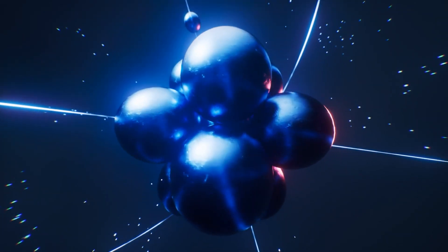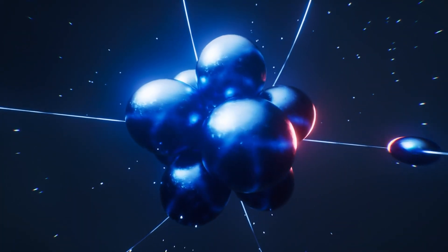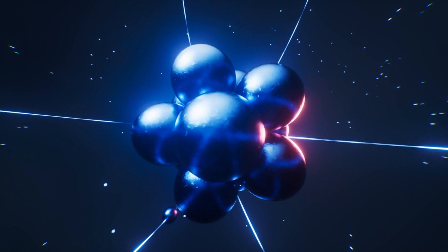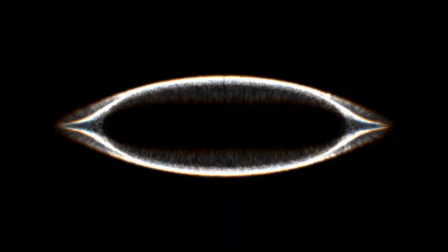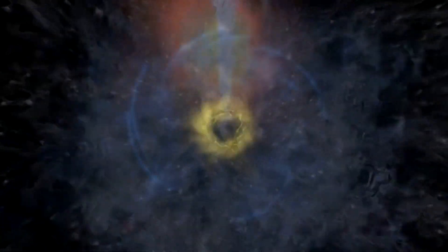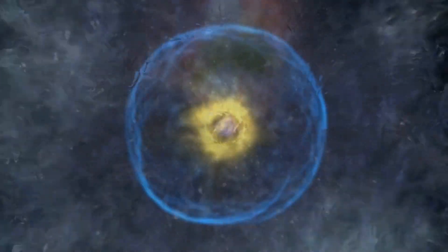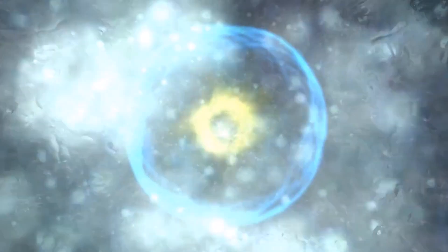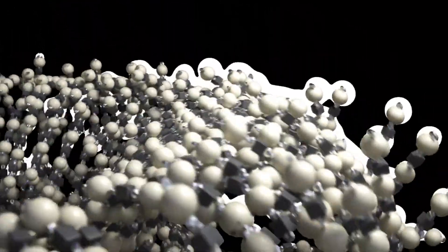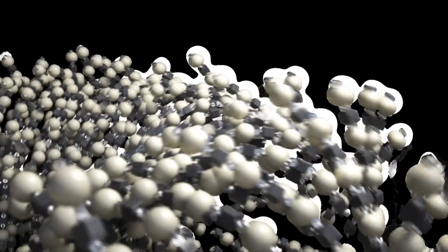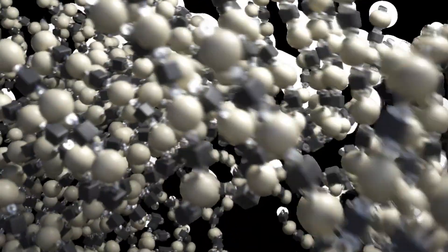But perhaps the most terrifying theory as to why the Boötes void exists is one that could spell the end of the entire universe. The reason? Strange matter. Strange matter is believed to be a highly stable form of quark matter that exists under extreme conditions. Quarks are fundamental particles that combine to form protons and neutrons, which make up the nuclei of atoms. Strange matter is created when quarks break free from their bonds and create a new type of quark, a strange quark.